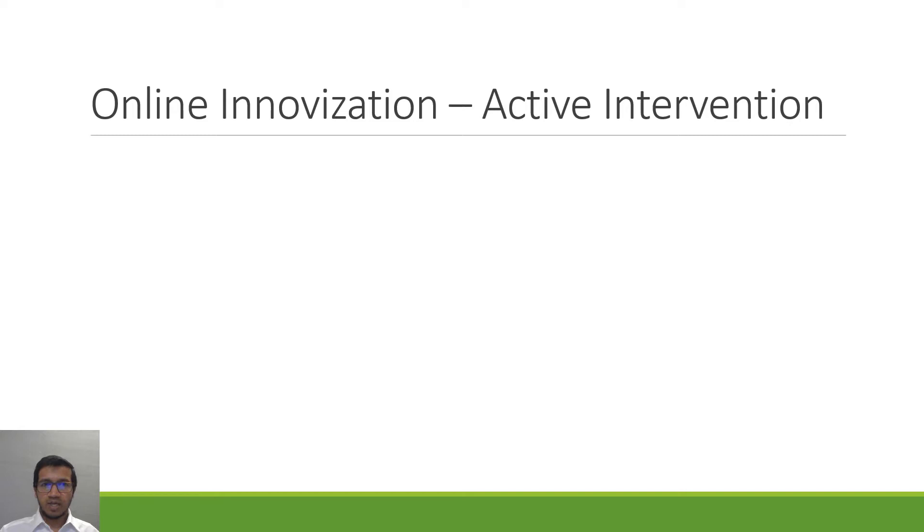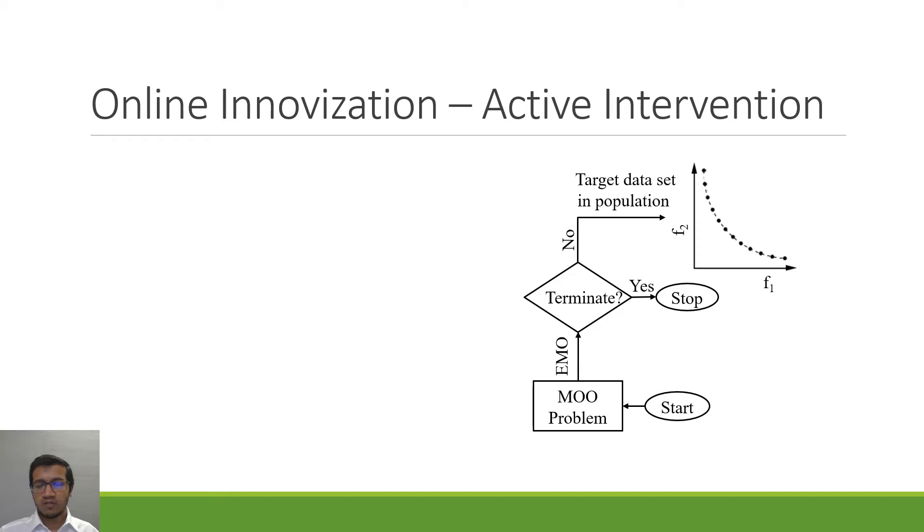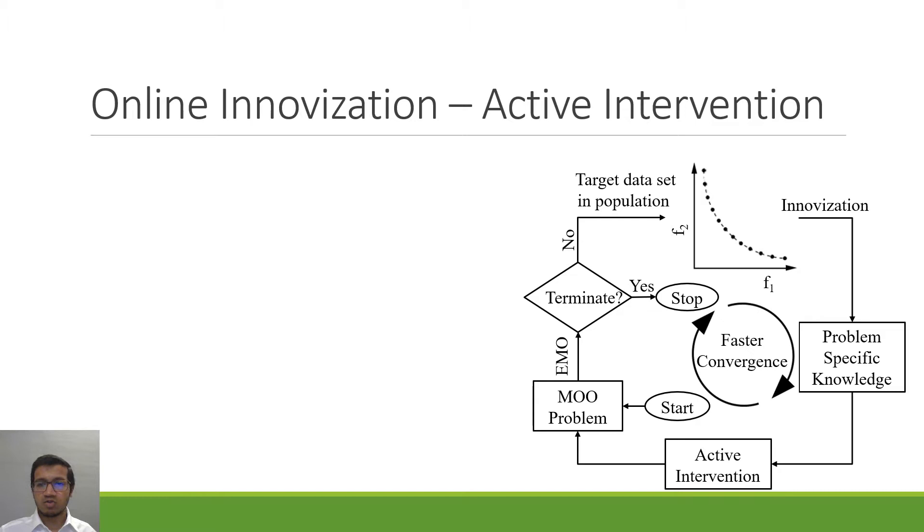So as we begin with online innovization as active intervention into an EMO algorithm, we solve an EMO algorithm to identify a set of non-dominated solutions from which we use innovization techniques and identify some problem-specific knowledge which then we can use as an active intervention to converge faster.